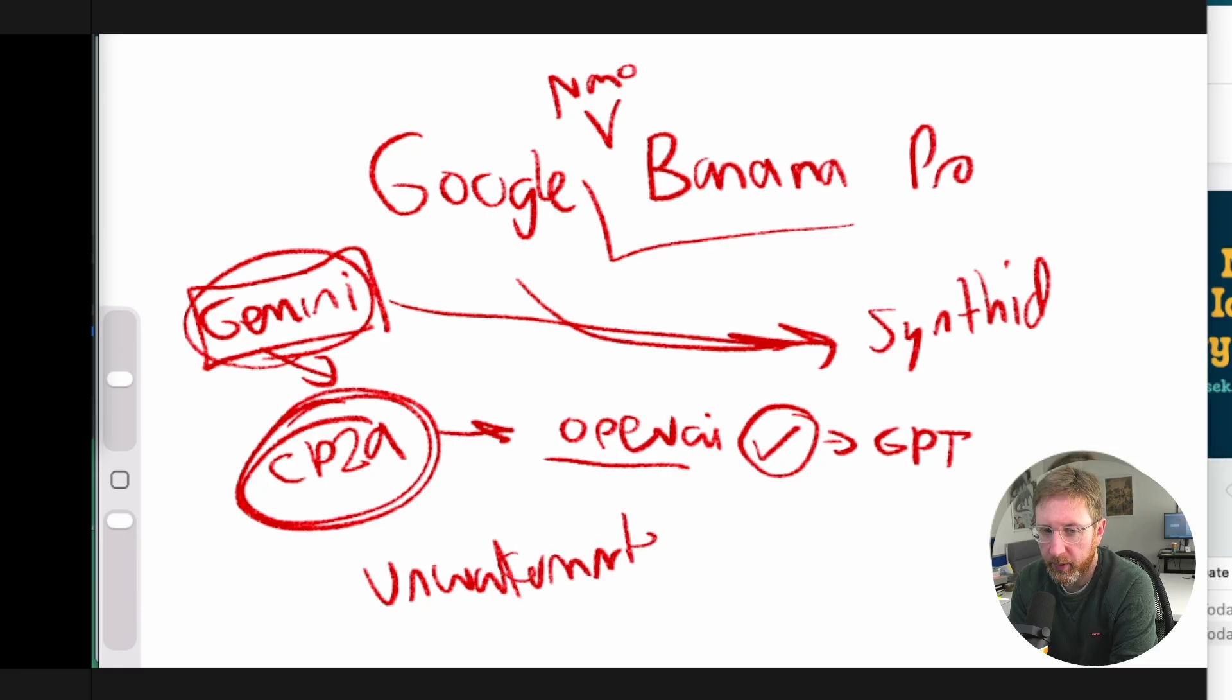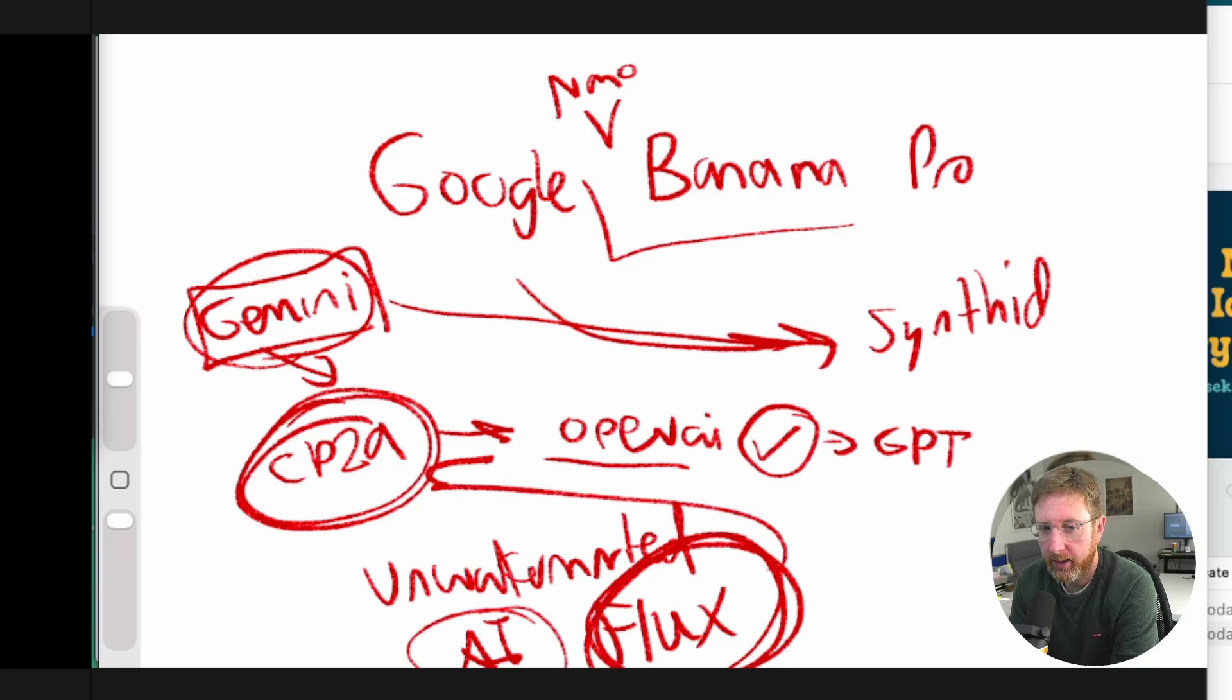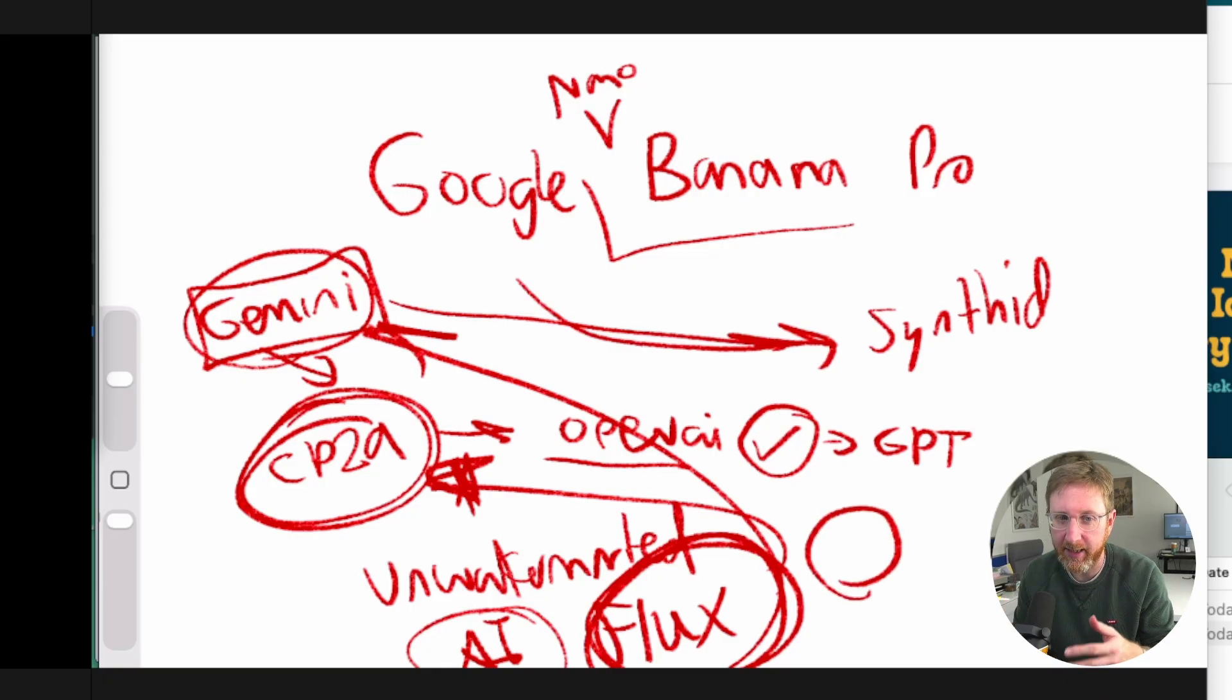But there are these unwatermarked AI models as well, previous AI models. So things like flux, which is unwatermarked and which, if you check that against Gemini or C2PA, there is no way that that can detect that it is AI generated. They're not able to check that because of the watermark has to be embedded in the, in the model, in the generation from the get go. And that's been a relatively recent development from the big players from Google and from open AI. I'm not sure if any others are actually using this watermarking technology yet.